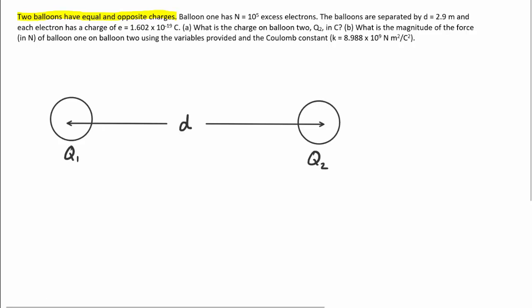Now we are told that balloon one has 10 to the fifth excess electrons. In order to determine the charge on balloon one, we want to remember that one electron will have a charge equivalent to 1.602 times 10 to the negative 19th Coulombs. And that's noted in the question as well. So all we have to do to get the charge on balloon one is to take the number of electrons and simply multiply that by the charge per electron.